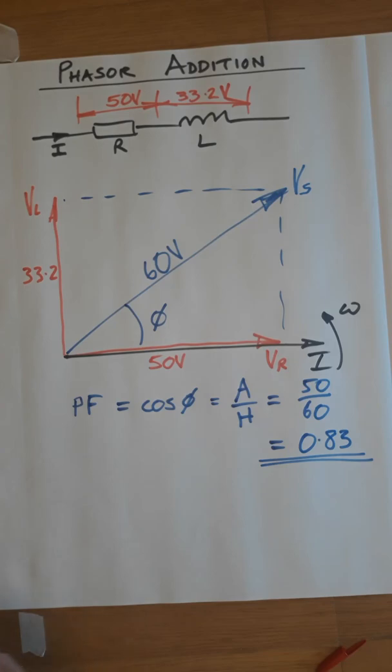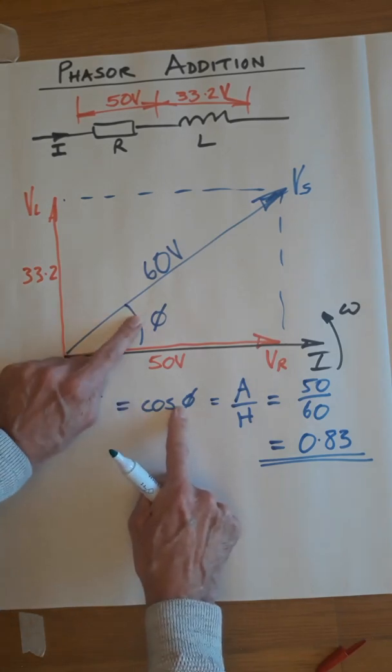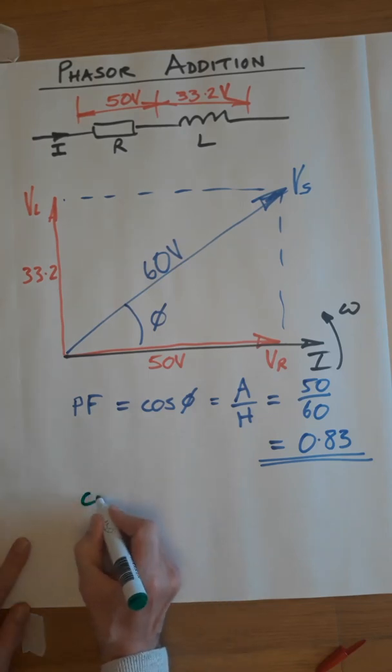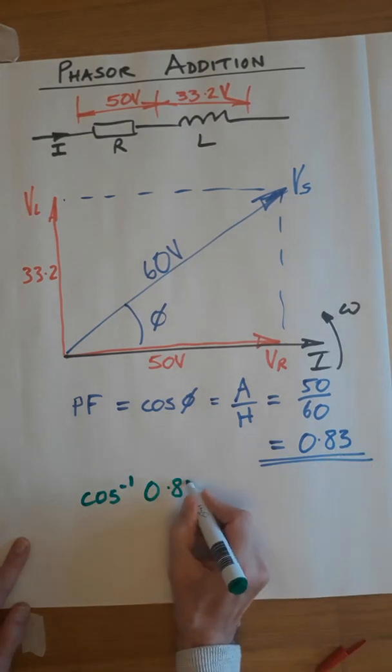And the final part of the question asks you to find the phase angle. So if we look at this, the cosine of that angle gives us 0.83. So if we do the opposite, so if we do cos to the minus 1, 0.83, which is that number,